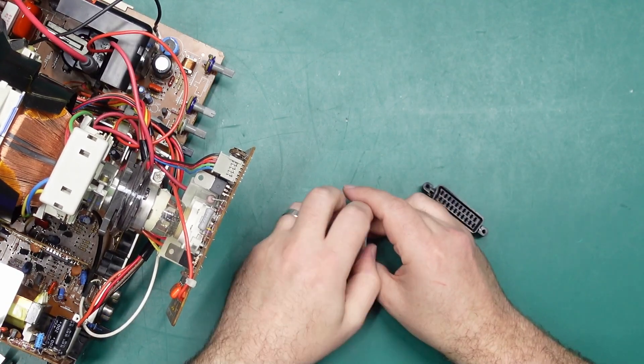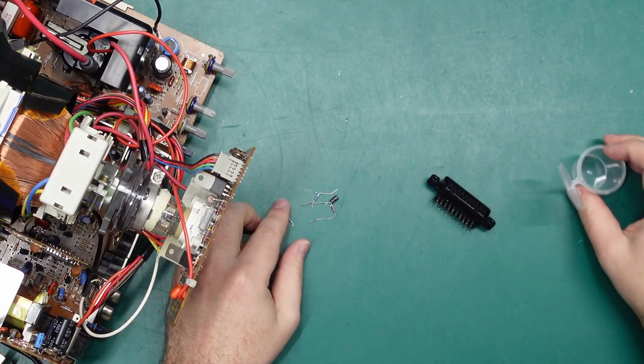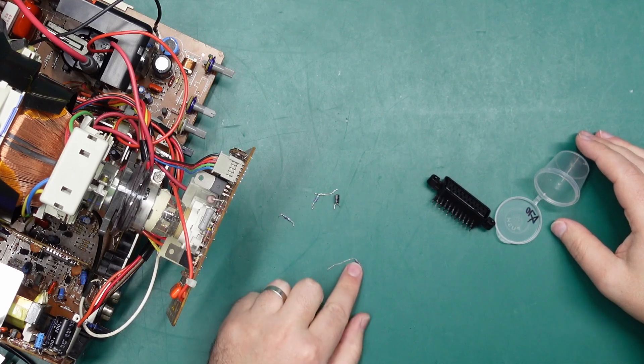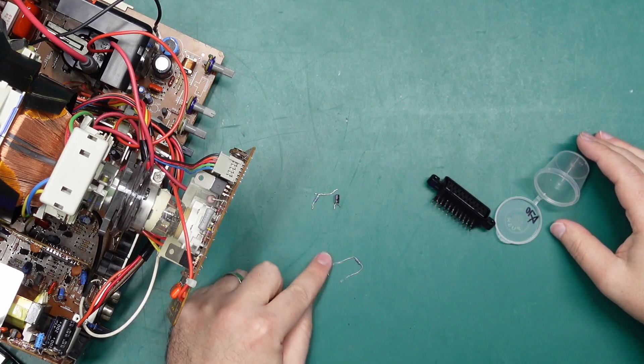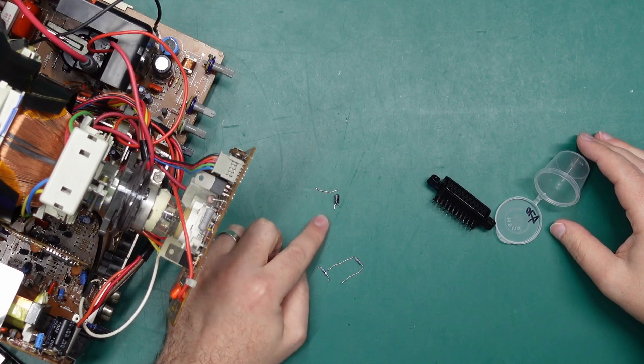The other parts that we'll need, it's all pretty simple, a 2.2k resistor, a 39k resistor, and a 47k resistor.